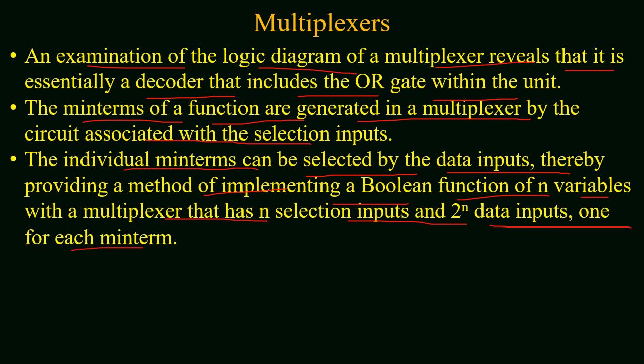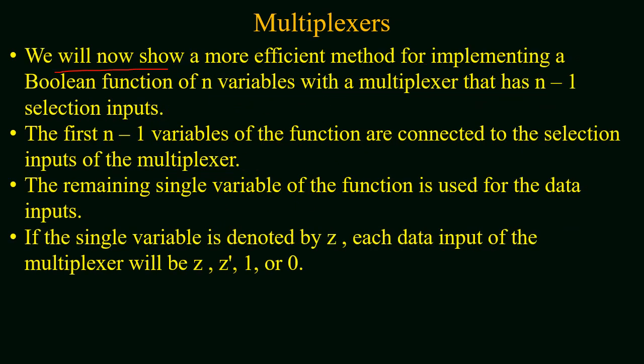Now we will study how to implement a boolean function with the help of a multiplexer, similar to how we implemented a boolean function with the help of a decoder. We will study a more efficient method for implementing a boolean function of n variables with a multiplexer that has n minus one selection inputs. If the given function consists of n variables, then the first n minus one variables of the function are connected to the selection inputs of the multiplexer, and the remaining single variable of the function is used for the data inputs.